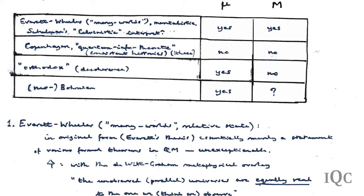What about the Neo-Bohmian view at the macroscopic level? The speaker has not yet succeeded in getting from any of the leading Neo-Bohmians a straight answer on what they believe the status of the state vector to be at the macroscopic level. So that remains unanswered.